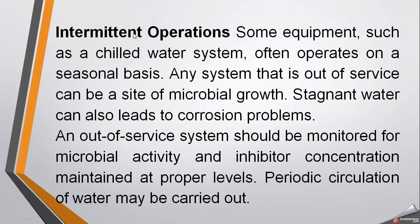Another important consideration is intermittent operation of the cooling tower. Some equipment, such as chilled water systems, often operates on a seasonal basis. Any system that is out of service can be a site of microbial growth, and when water is stagnant in the system it can lead to corrosion problems. An out-of-service system should be monitored for microbial activity and inhibitor concentrations. Inhibitor concentration must be maintained at proper recommended levels, and periodic circulation of water may also be carried out to avoid corrosion due to stagnant water.